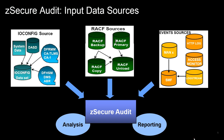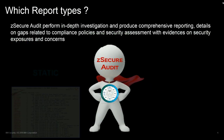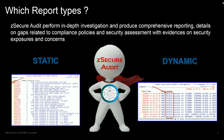zSecure Audit works with different inputs called data sources. You have data from your security system — your security database, RACF data — that describes your system configuration, the CKFREEZE data set, data describing events from your SMF records, data created by the Access Monitor (which is a component of zSecure Admin), and data from other log types such as HTTP logs.